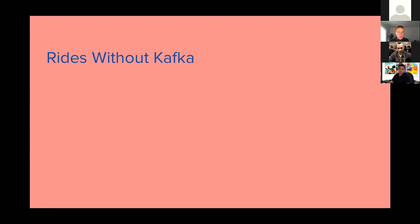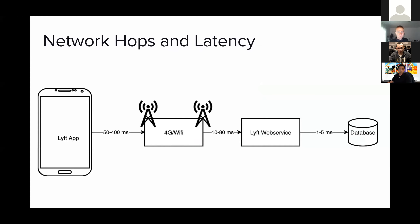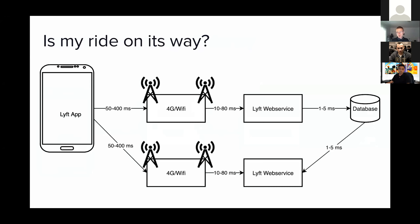Let's talk about what it takes to make a ride successful. Lyft provides the ability to request rides — you enter a destination, press confirm, and we match you with a driver. It's a mobile app hitting a 4G/WiFi network to a Lyft web service, with ride data persisted in a database. Your app then polls through the web service to read the latest ride status. Lyft actually has countless services shepherding a ride through a massive state machine.